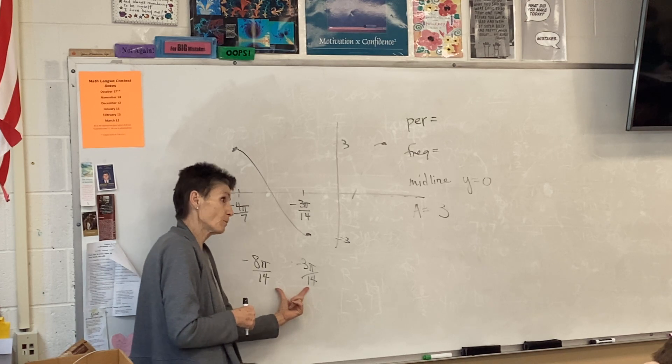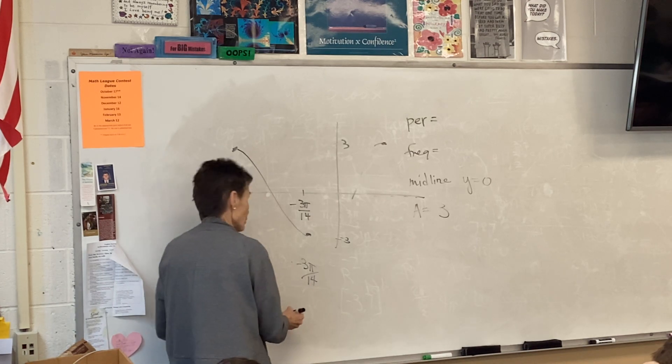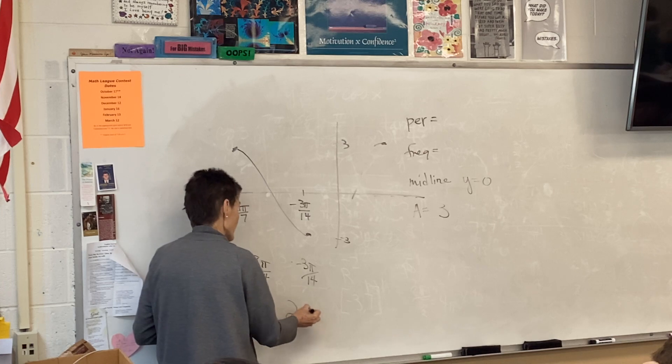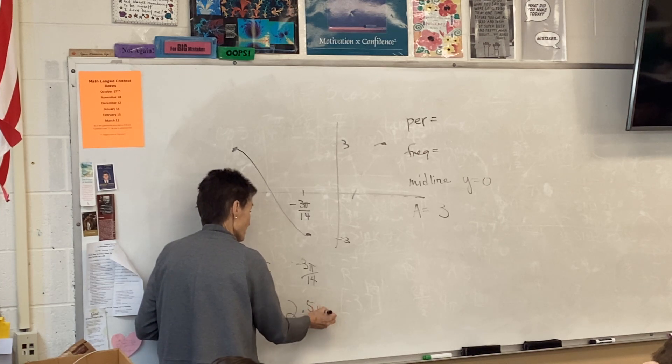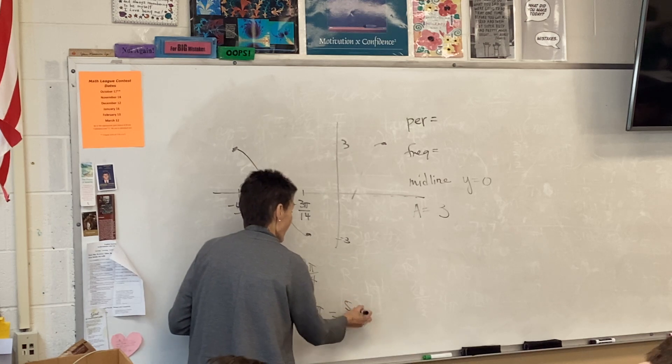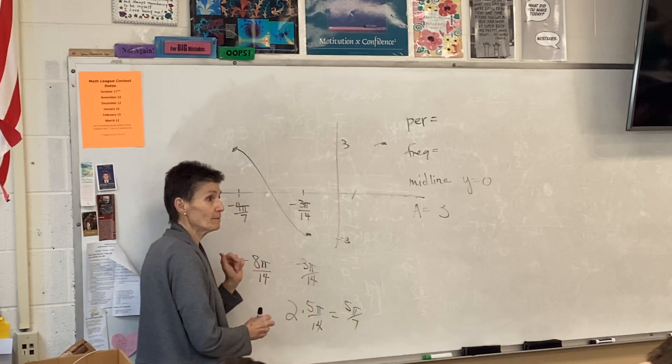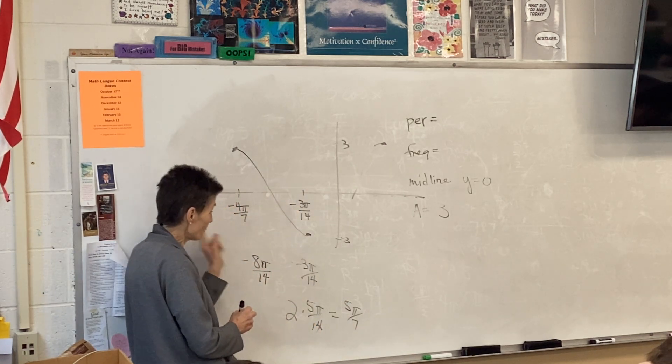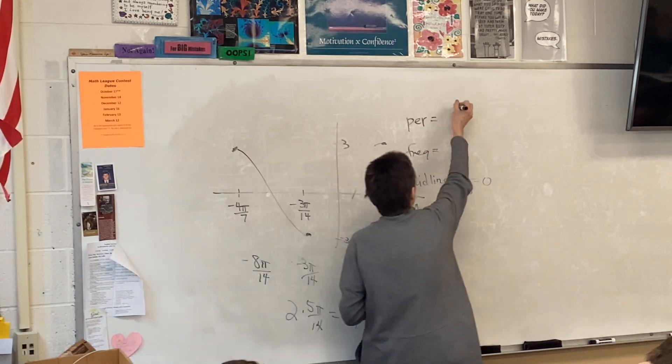So a half a period is how much? 5π over 14, which means the whole period is twice that, which is 5π over 7.